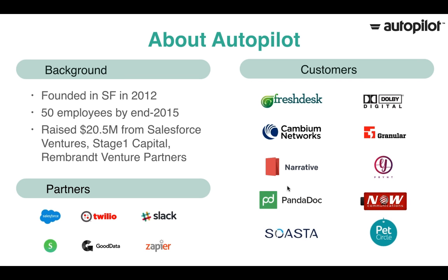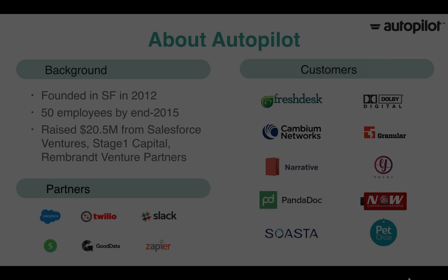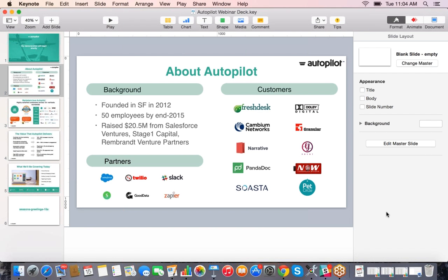We also integrate with Slack for internal notifications, Segment.io so you can fire campaigns off of Segment events that someone might do in your app, and we have a GoodData integration for reporting and analytics. Lastly, we integrate with Zapier which gives you access to hundreds of other products that you can start campaigns with.